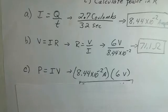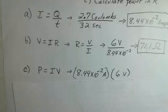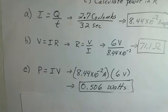What about our power? We can use the current in the circuit element times potential difference across the circuit element. So 8.44 times 10 minus 2 amps times 6 volts gives 0.506 watts.